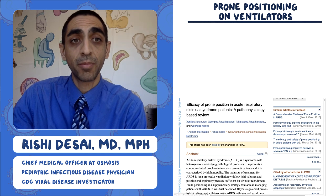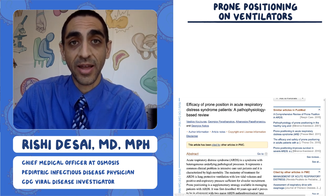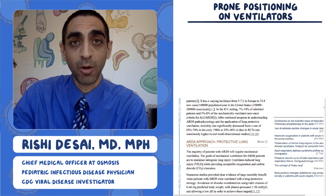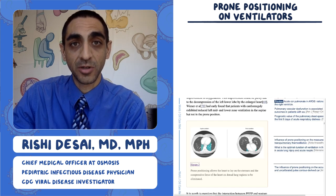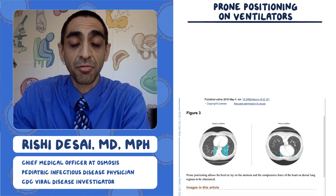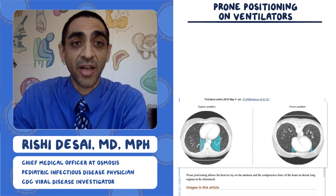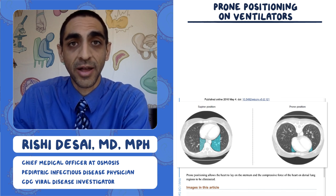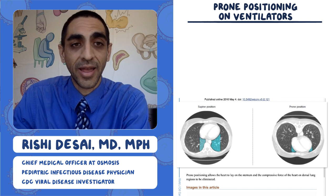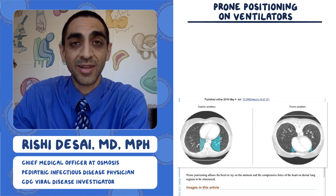I found a review on prone ventilation in ARDS patients with a neat figure that illustrates clearly why prone positioning works. This is figure three from that article. On the left they show supine — a person lying on their back — and on the right they show prone — a person lying with their chest to the bed. On the supine side, you can see that the heart is raised.